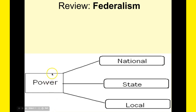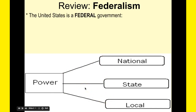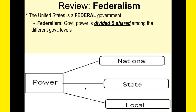The first thing I want to do is quickly review something we've learned about many times in this class: federalism. It is a main component of this topic of community development. Here you have an image with the concept of power going towards the national, state, and local government. Federalism is all about how the power of government is shared and divided among the different government levels. Local problems need local solutions — if you have a problem affecting the city or county you live in, you're going to need the city or county government to fix it.